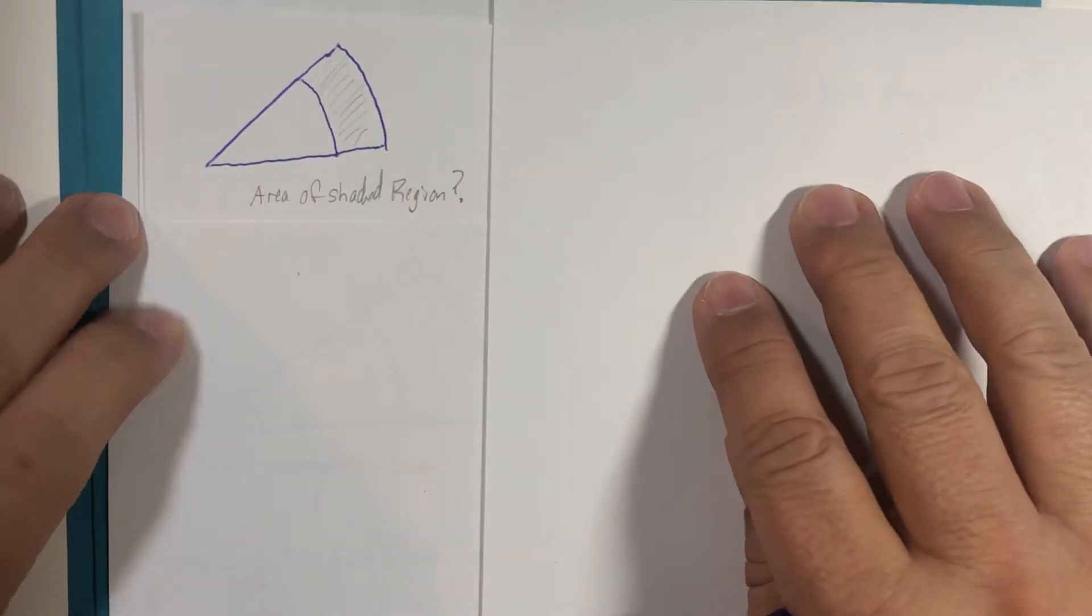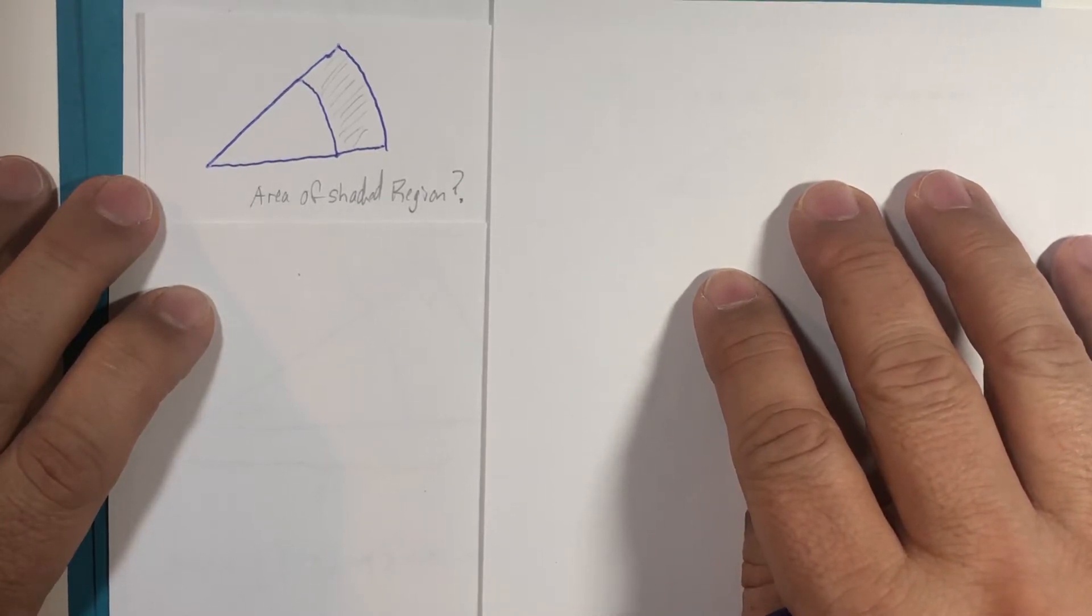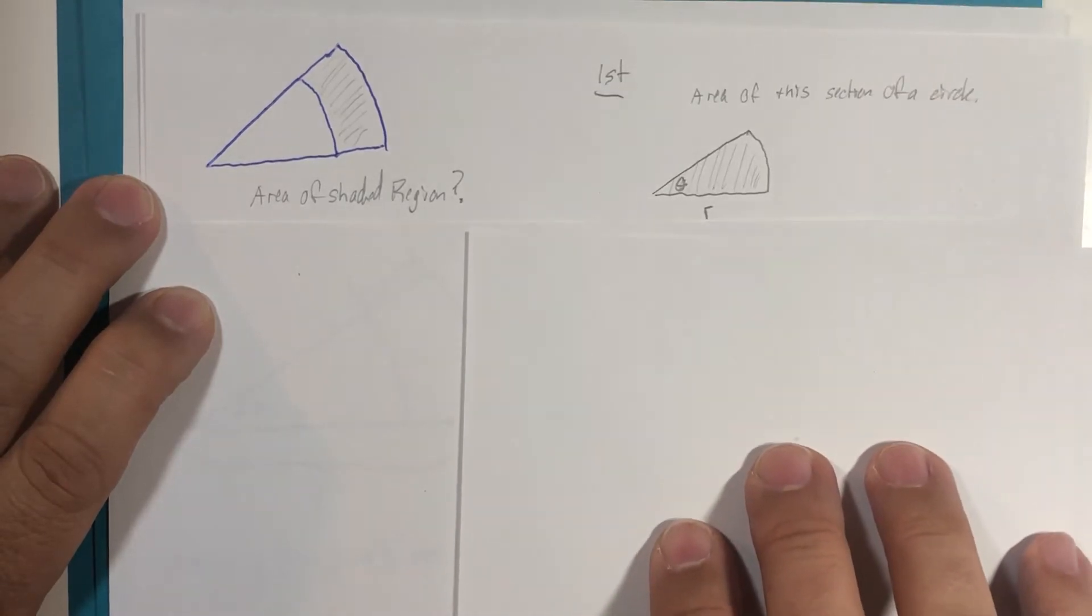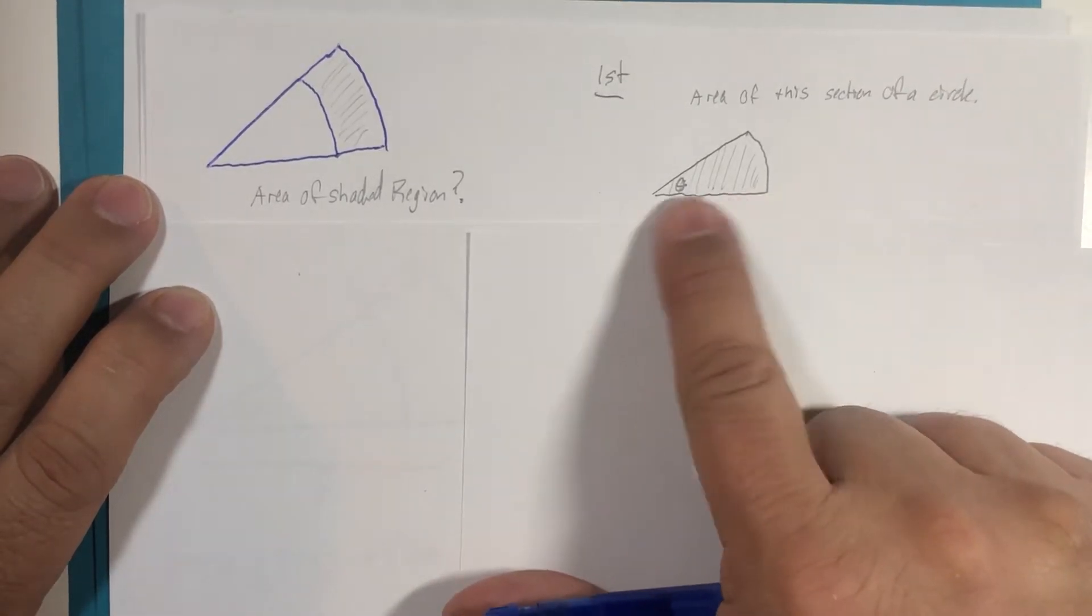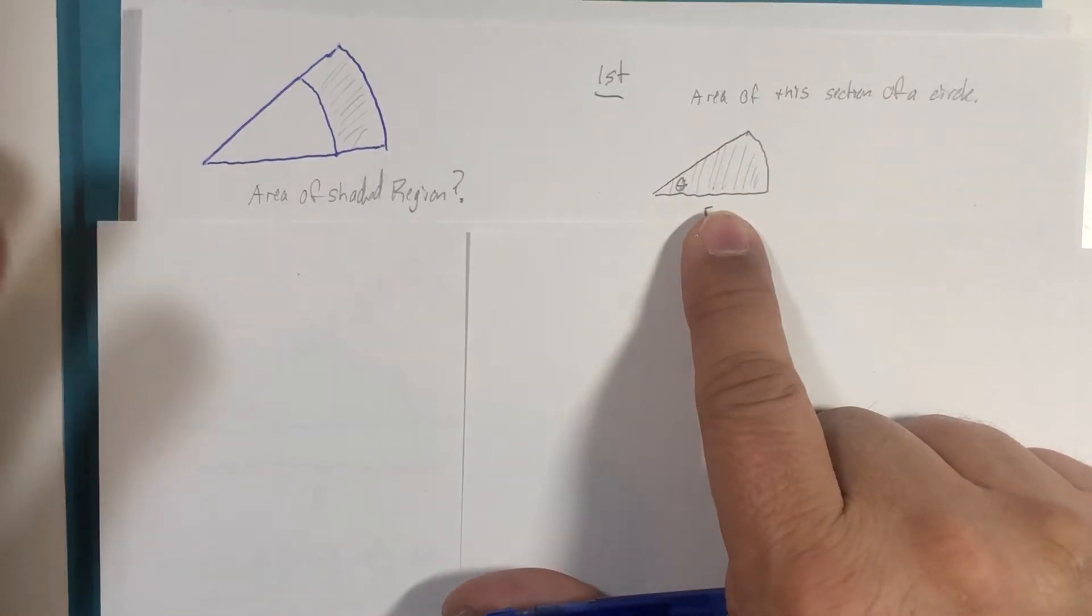So to do that, I'm going to refer back to an old geometry formula. There's another method of doing what I'm about to do, but I'm going to use geometry right now. So what if we were just taking a slice of pizza, the entire slice, and we wanted to find the area of that slice of pizza?